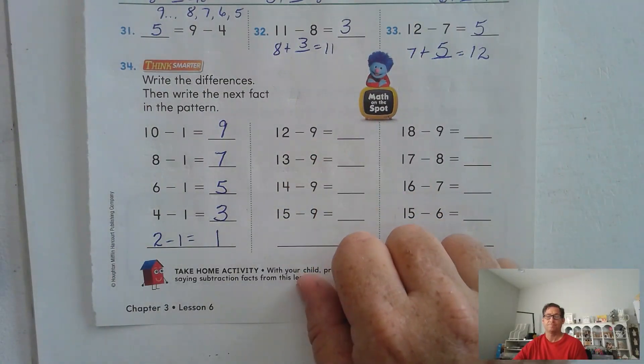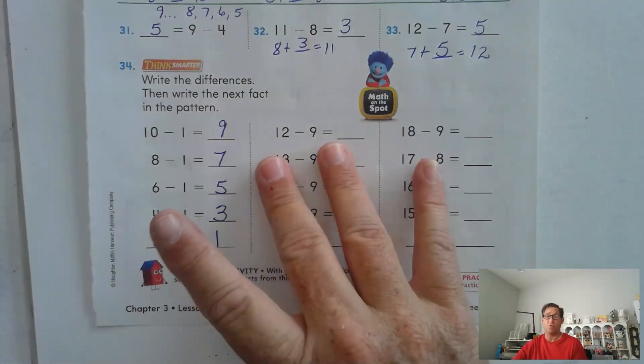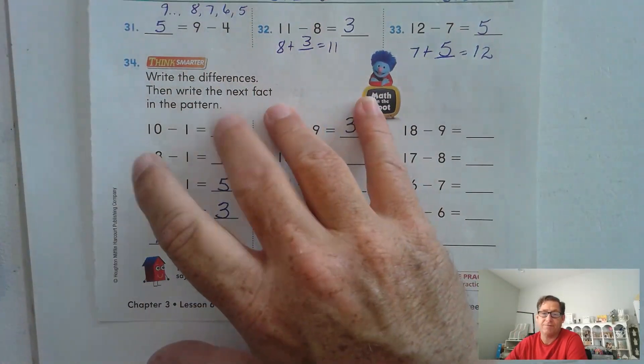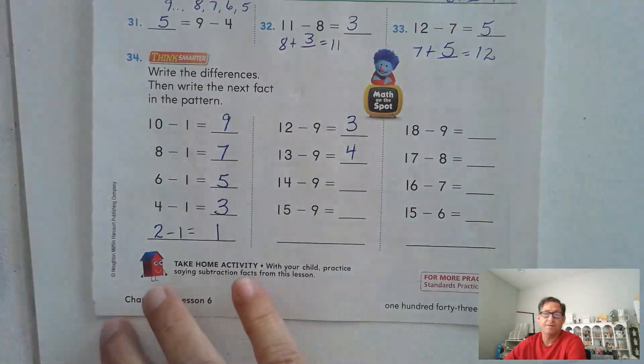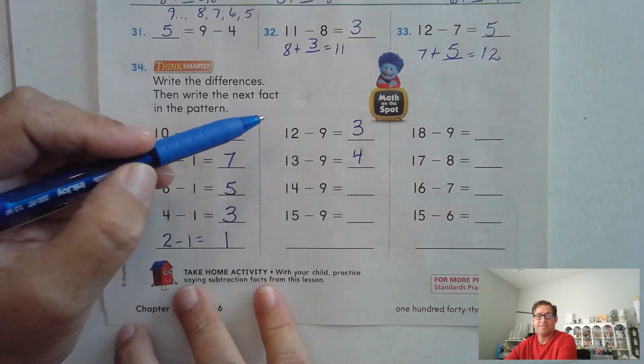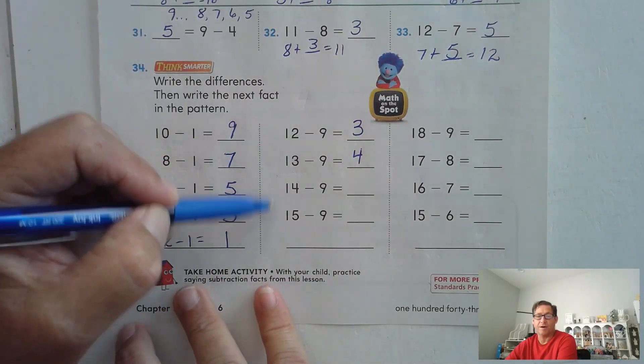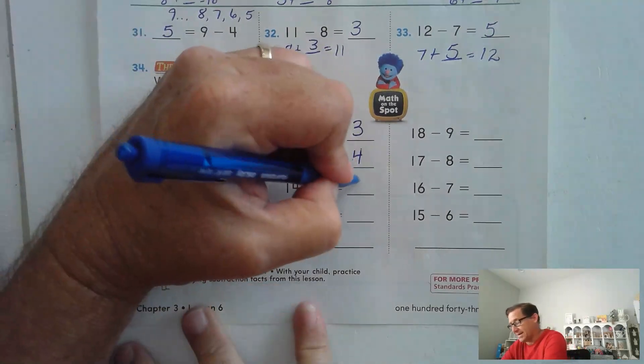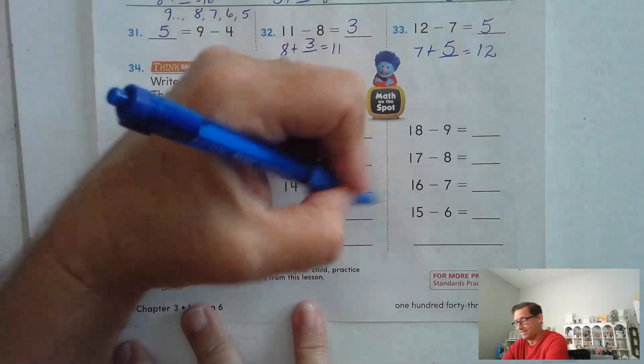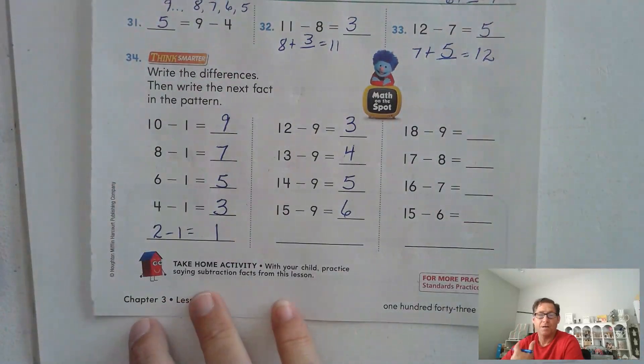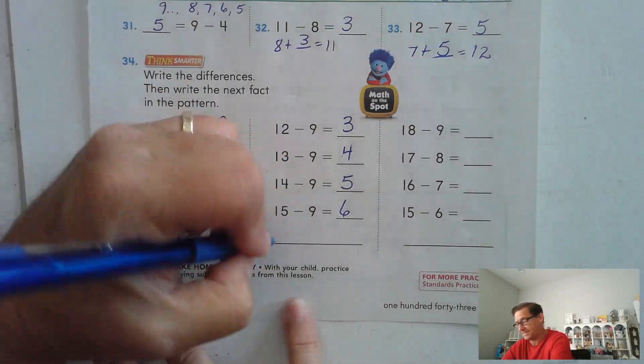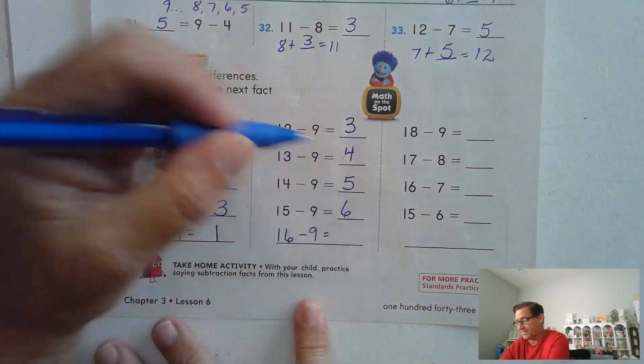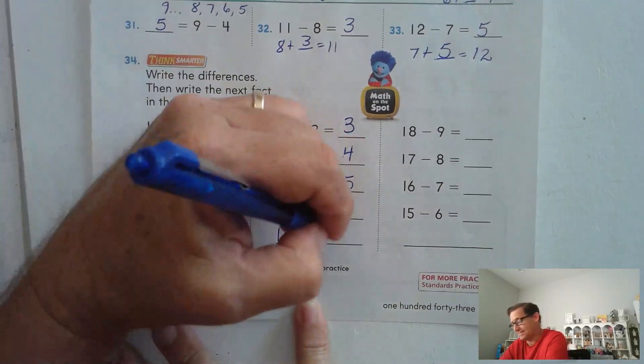12 minus 9. Well, I would count forward. I would go 9, 10, 11, 12. So that would be 3. 13 minus 9: 9, 10, 11, 12, 13. That would be 4. So I'm noticing now we're taking away 9 each time, and our total is getting bigger by 1 each time. My answer is also getting bigger by 1. So if 13 take away 9 is 4, then 14 minus 9 is 5, and 15 minus 9 is 6. So what's the next fact? 12, 13, 14, 15. It's got to be 16. We're taking away 9 every time. So 16 take away 9. And our differences have been 3, 4, 5, 6. So it's got to be 7.